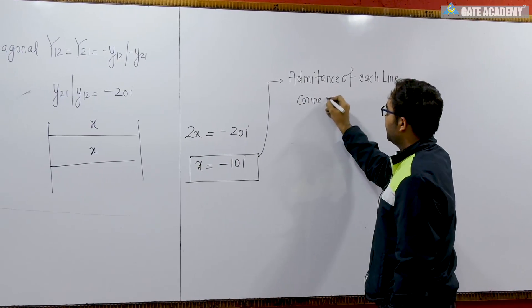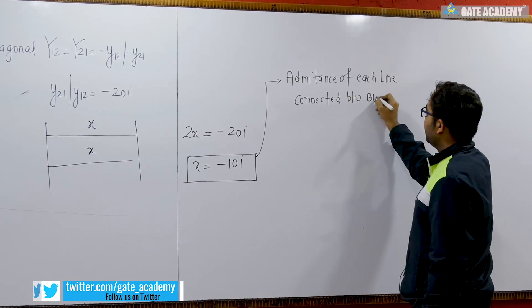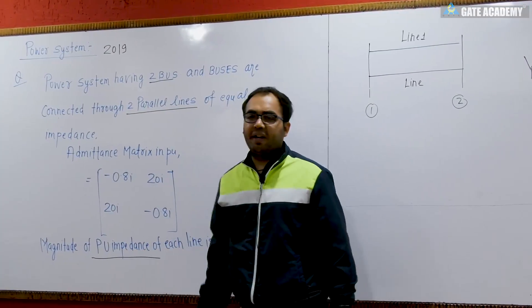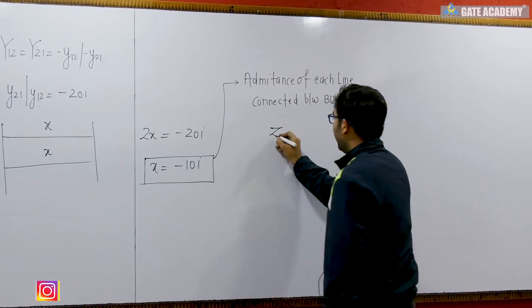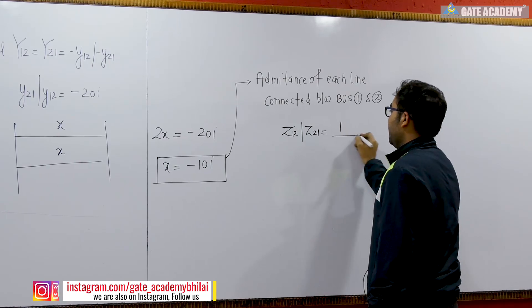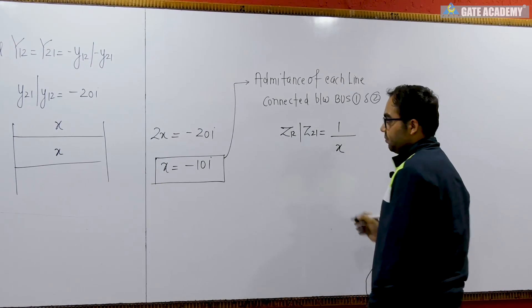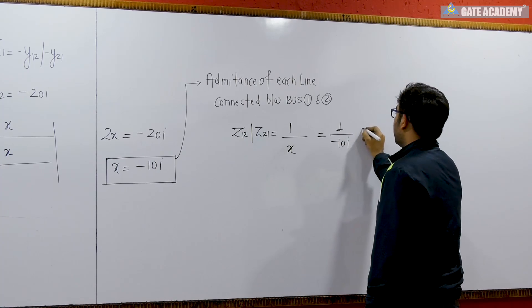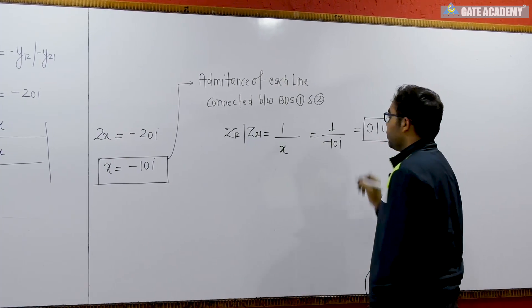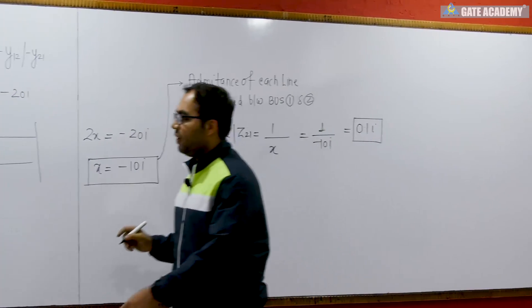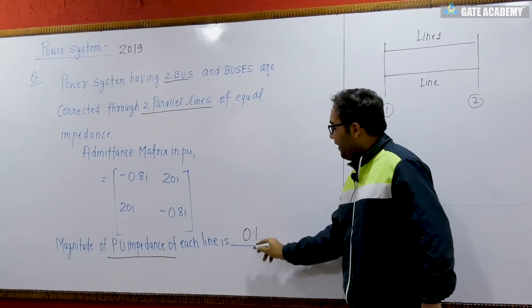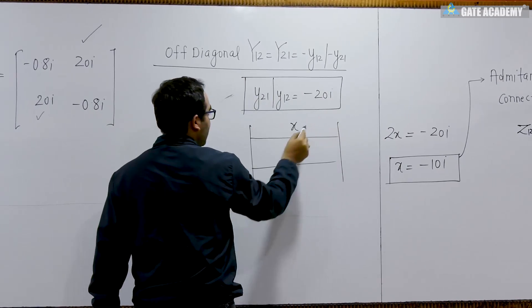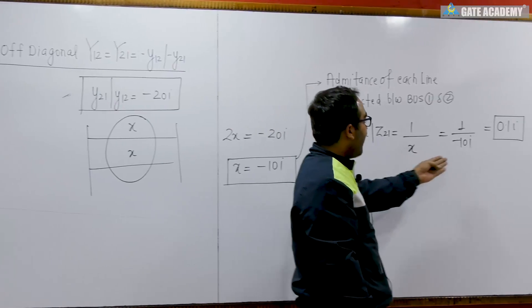The admittance of each line connected between bus one and bus two is known, but the question asks for the magnitude of per-unit impedance. So we take the inverse of the admittance: z₁₂ equals one over x, which equals one over minus 10j, giving us 0.1j. This is the impedance of each line. The question asks for the magnitude, so the answer is 0.1.